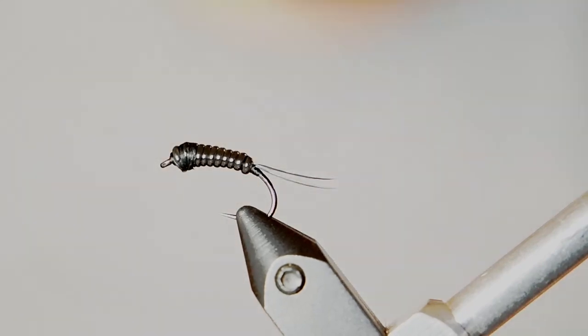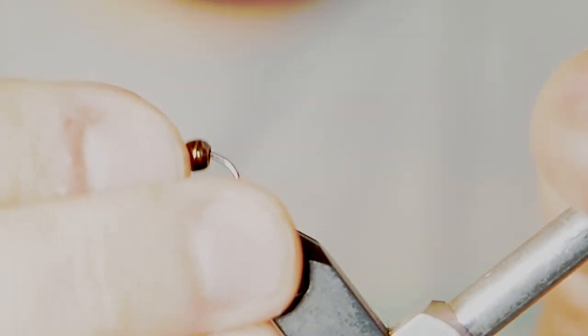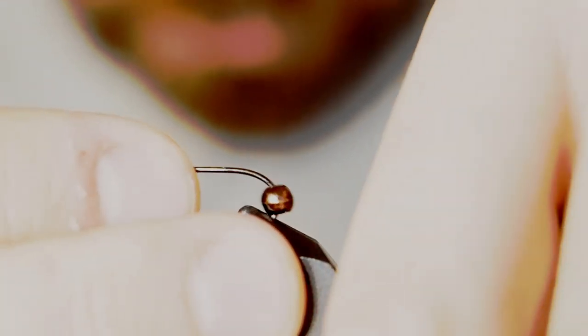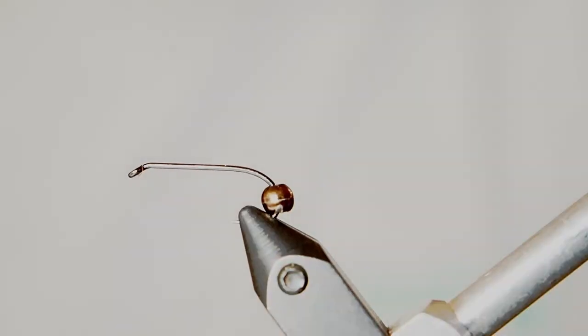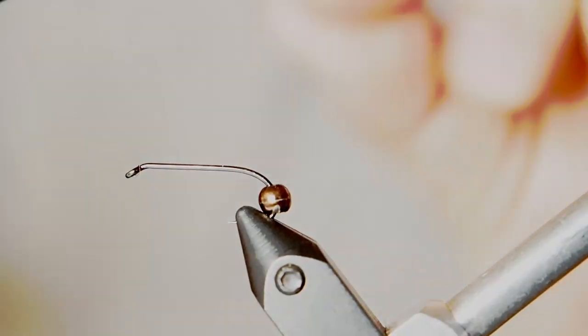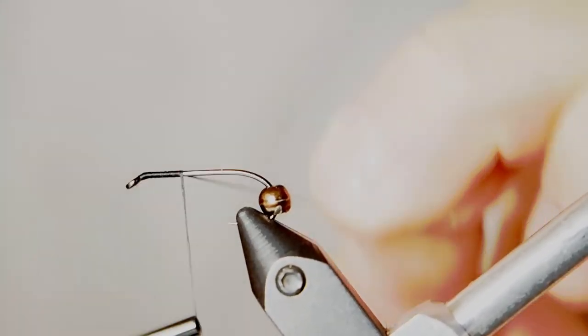Now we're going to switch out and move to the traditional nymph hook. It's got a flat shank here and it's long enough that it will take a bead. Now we've got a bead on here, but we're not going to move it to the eye of the hook yet. First thing I'm going to do is just dress the front of the hook. I don't need to go very far back.